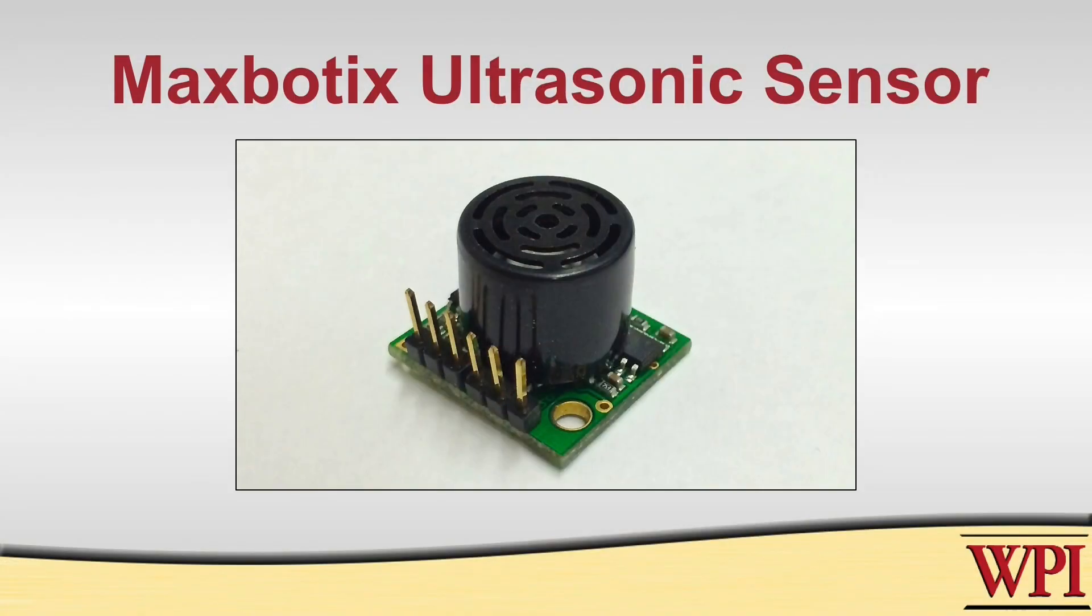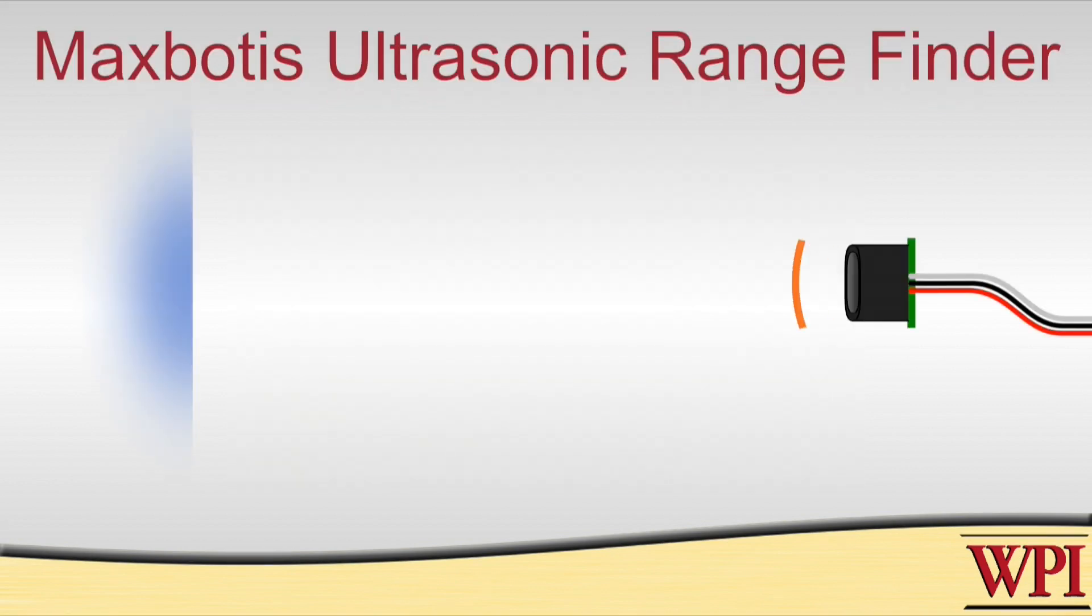I want to show you a different one now that's made by a company called MaxBotix. This works exactly the same way. It sends out a pulse and receives it. The main difference is that it uses the same transducer for both purposes. There's actually a PIC microprocessor on board this that does the range calculations for you. So unlike the VEX sensor, where you have to have code that does those calculations, the code is done for you on this device.